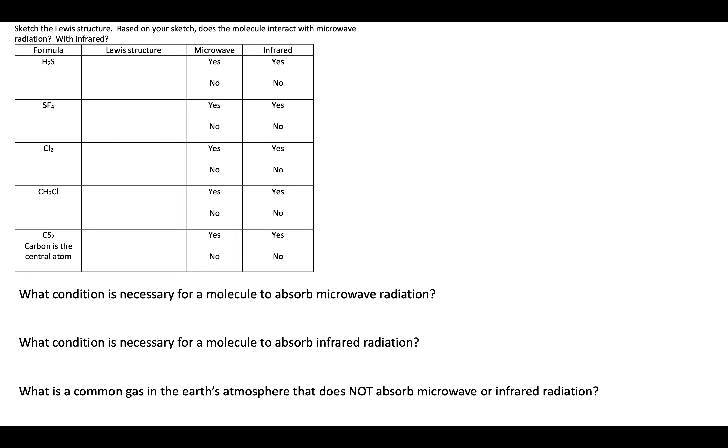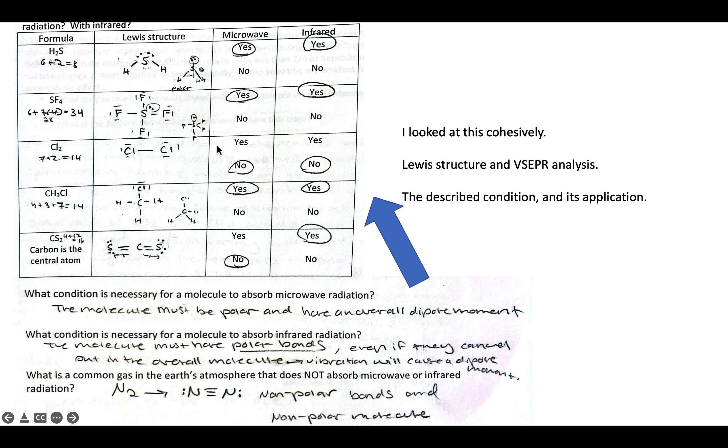This one we had drawing Lewis structures and then interpreting them. I looked at this cohesively. I was looking at a lot of different features. I wanted to see the Lewis structures and the corresponding VSEPR analysis, your description of the conditions that would give rise to absorbing microwaves or the infrared, and then how that applied back with the your own assignments here. If there was one that I saw that some folks struggled with was this very first Lewis structure and not recognizing that that was a polar molecule with a bent structure just like you'd also find within H2O.